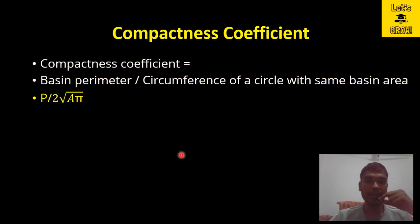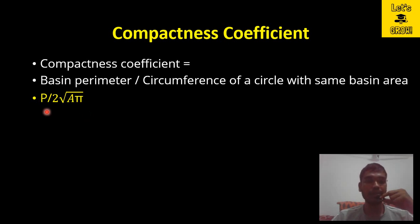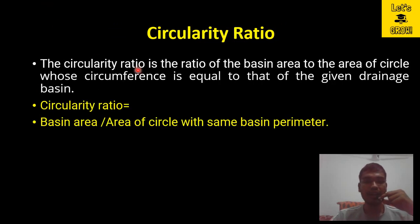We can now write the compactness coefficient as the basin perimeter p divided by the circumference of the equivalent circle, which is 2√(A/π). Therefore, the compactness coefficient for a given basin having area A and perimeter p is calculated using the formula: p divided by 2√(A/π).